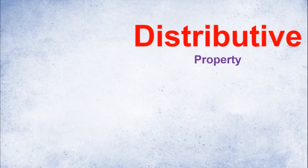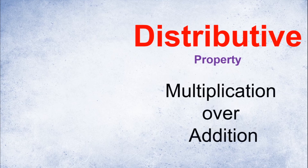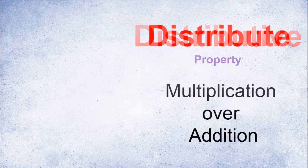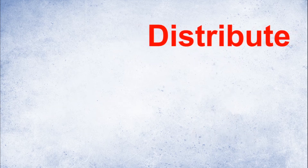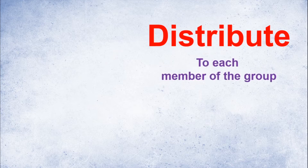Let's start the topic. Distributive Property — we have an extension of this. It involves multiplication or addition. Think of it like this: if we distribute paper to each member of a group, that's the idea of distribution.